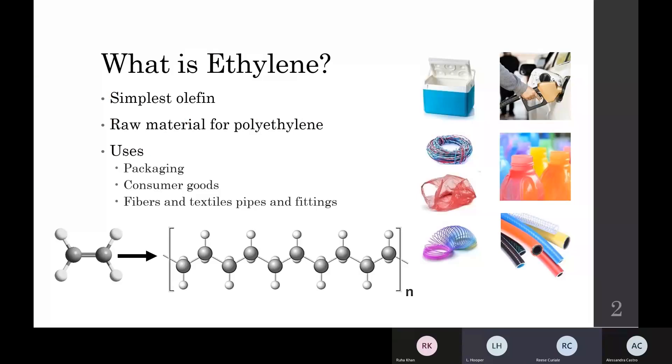The world as we know it relies heavily on the simplest olefin known as ethylene. It is used for several purposes, but especially in the polymers industry to create polyethylene. Polyethylene is the most commonly used plastic, mainly for packaging purposes, and plays a monumental role in society today and will continue to do so for the foreseeable future.